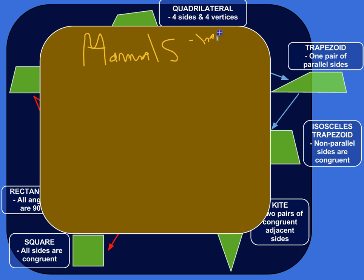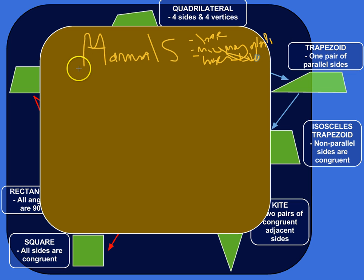All mammals have hair, mammary glands, and they're warm-blooded. There are certain characteristics that everything that's a mammal will share. And so in our taxonomy here,